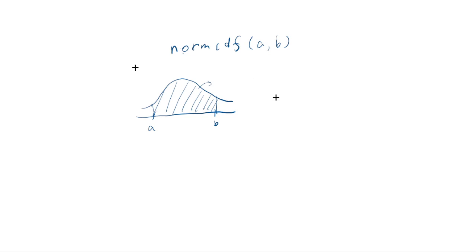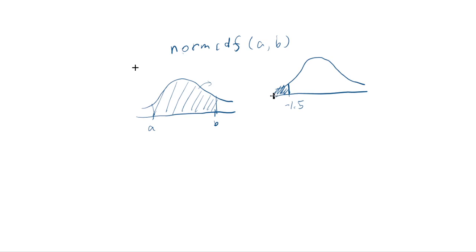However, often one side has to be negative infinity. For example, if you want to know the p-value for a left-tailed test at negative 1.5, you're really being asked for the area left of negative 1.5 as the z value. If you think of this as an interval, it starts from negative infinity and ends at negative 1.5, and you have to evaluate normCDF of this.